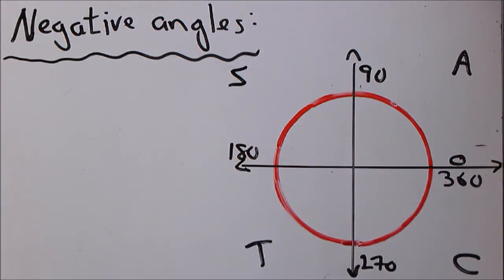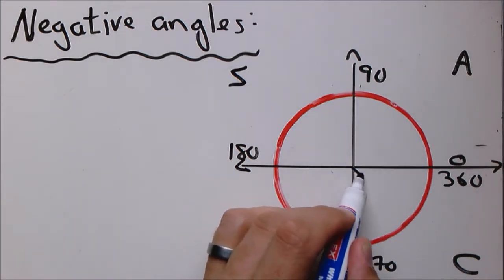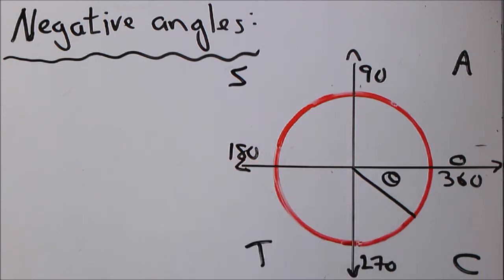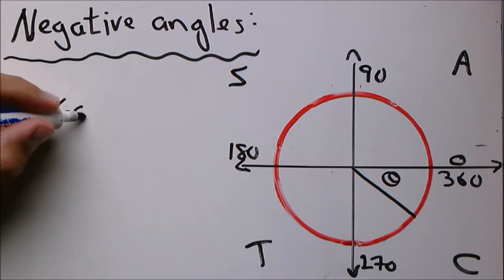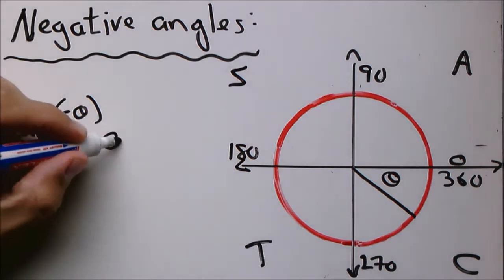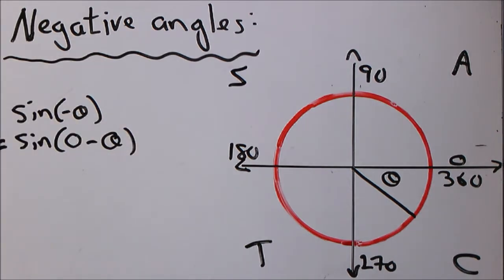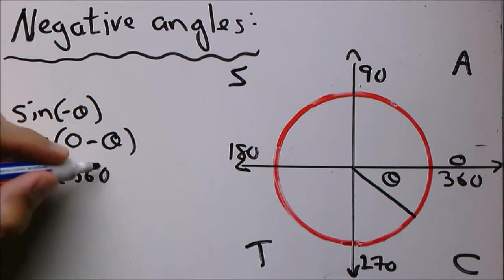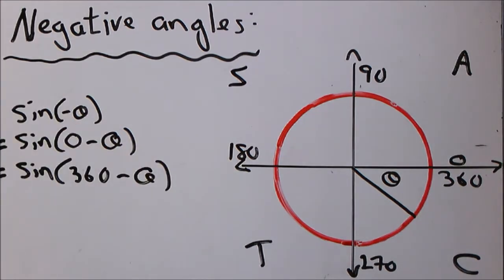Normally if we have a theta we would indicate it with the angle, but now we have an angle called negative theta. Let's say this is the question sine negative theta. I want you to understand that this also equals sine zero minus theta, which we will interpret as the fourth quadrant. It's also the same as saying sine 360 minus theta. All of them are the same thing.